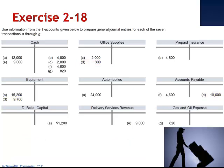Letter E debits cash for $9,000 and credits delivery services revenue for $9,000. The company received $9,000 in cash for delivery services provided.